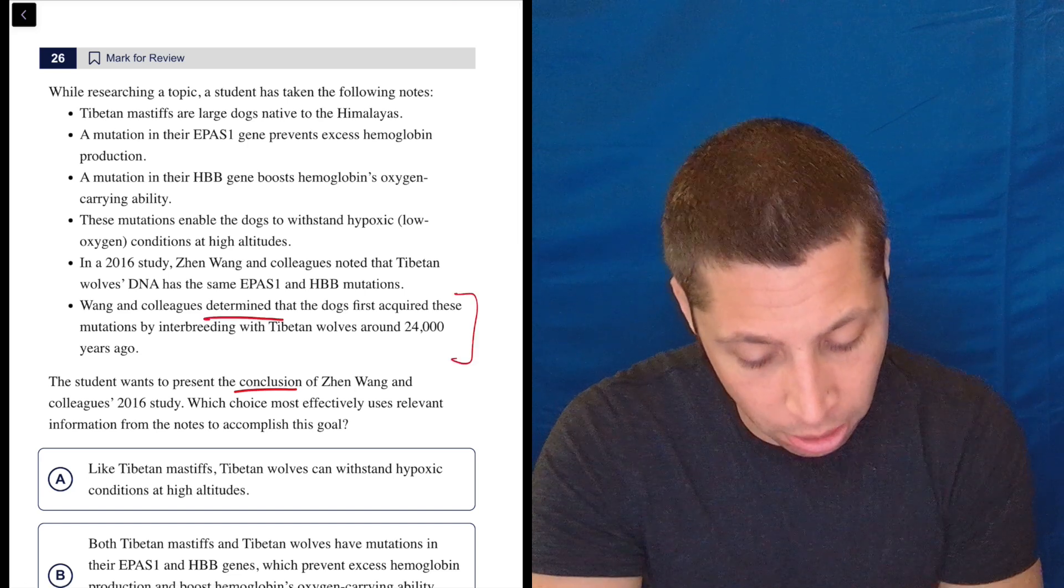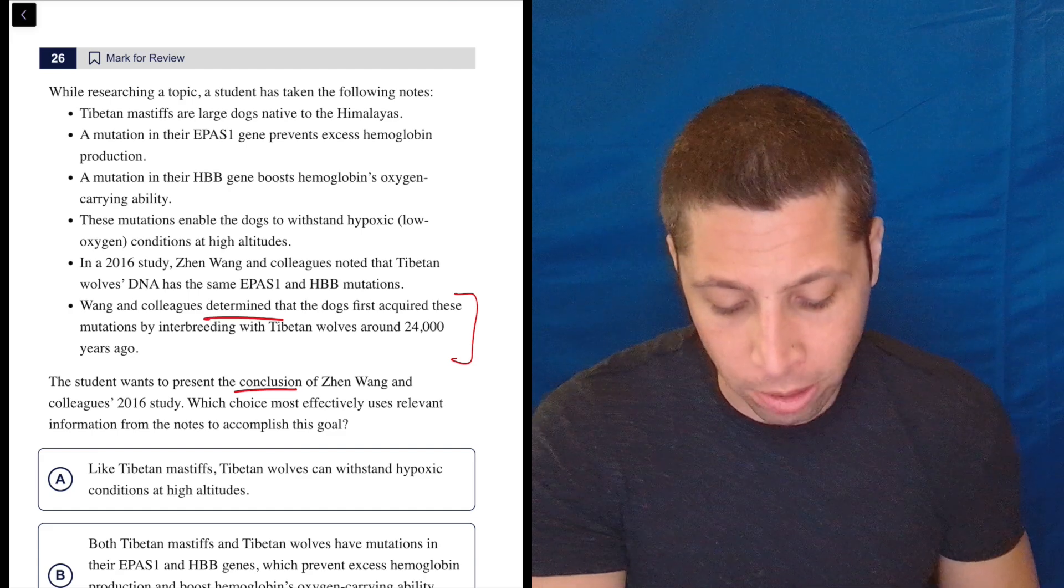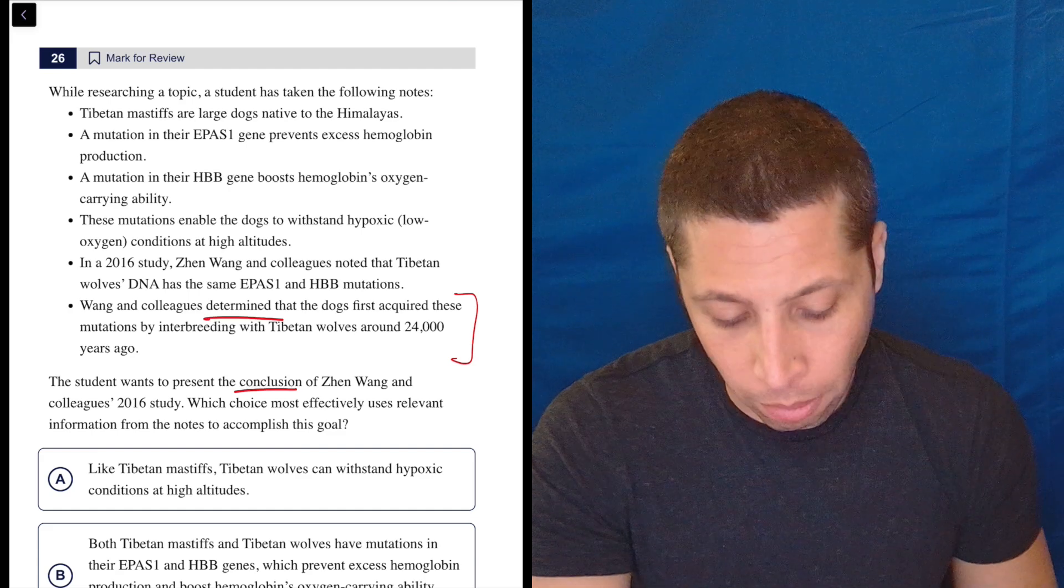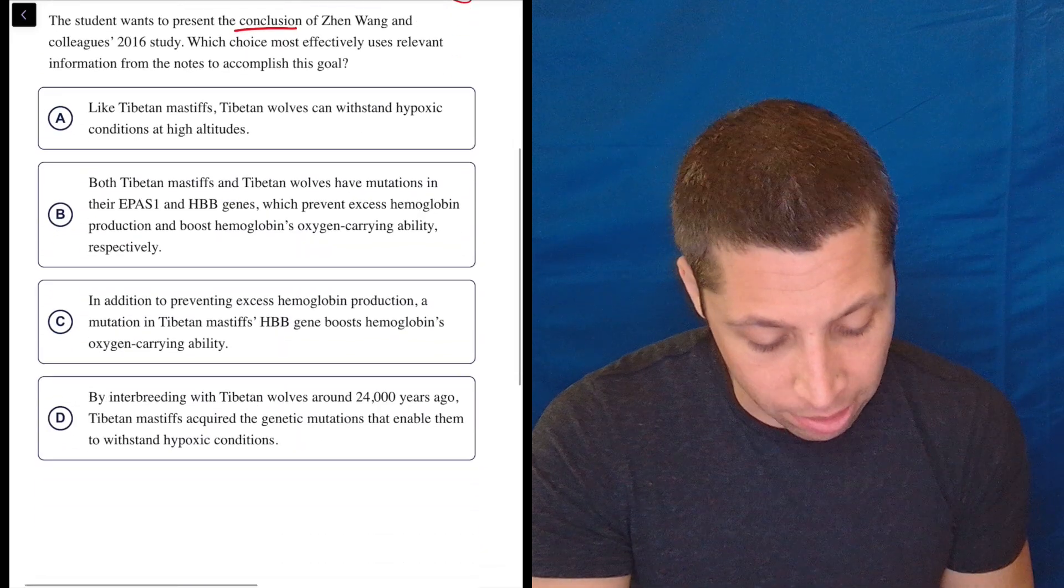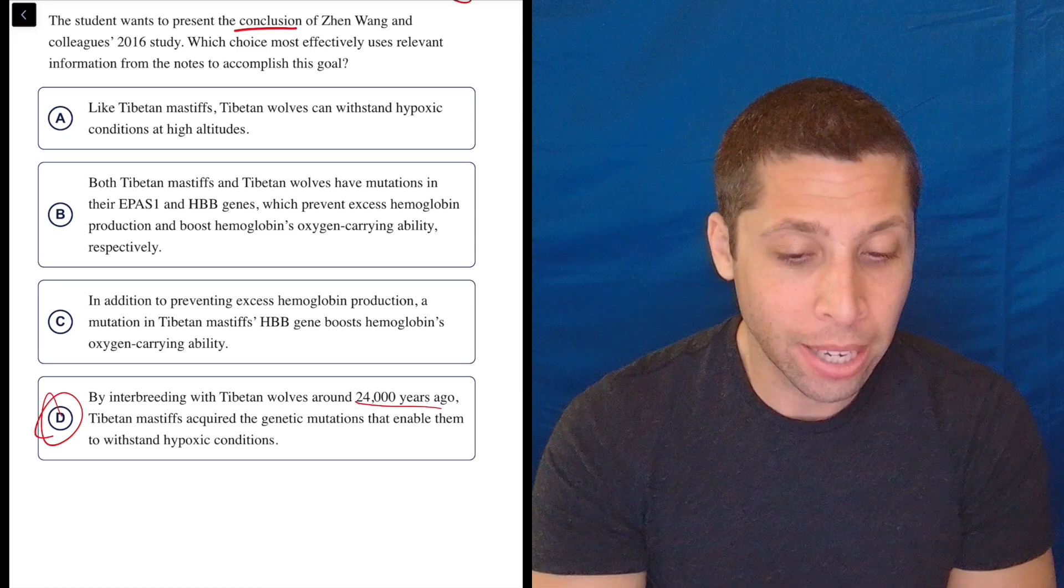Wang and colleagues determined, that sounds like a conclusion, that the dogs first acquired these mutations by interbreeding with Tibetan wolves around 24,000 years ago. Yeah, that's this piece. There you go. Done.